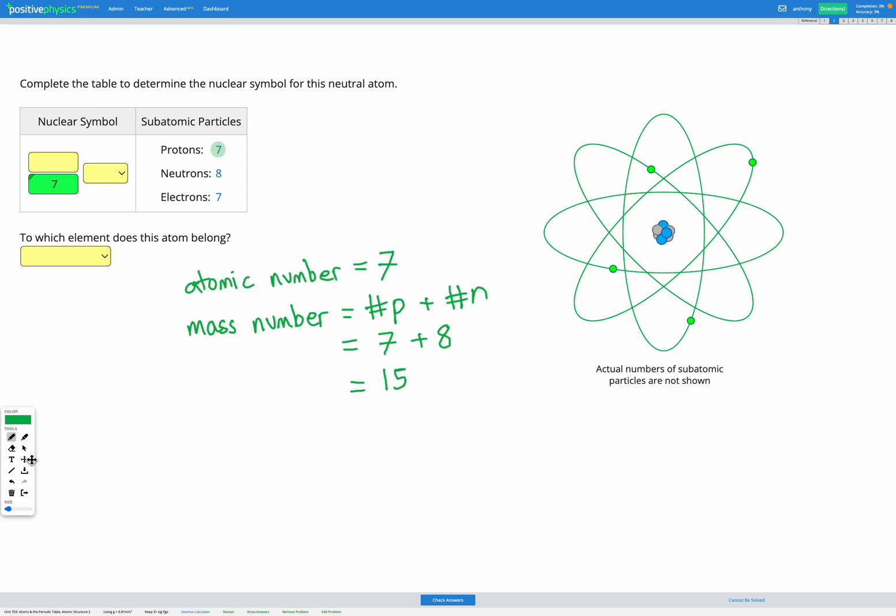And that's the number that goes on the top in our nuclear symbol. So we're going to have 15 up here. Okay, so we've got our numbers sorted.